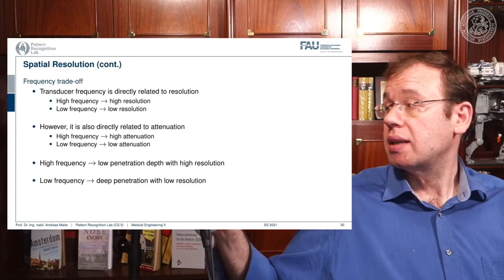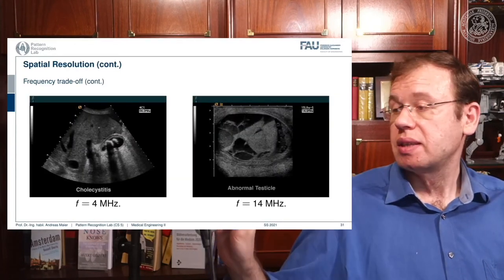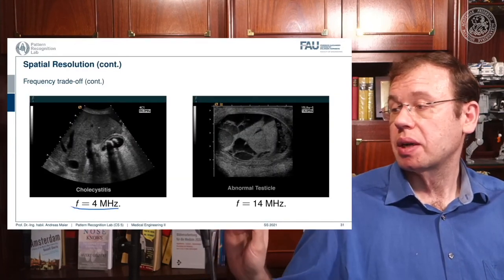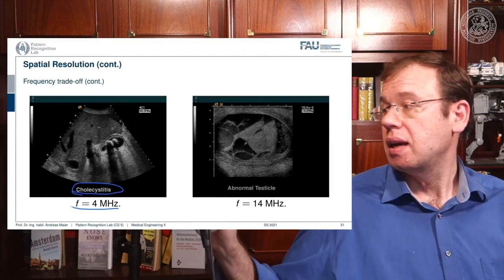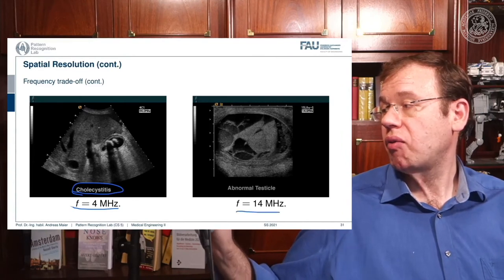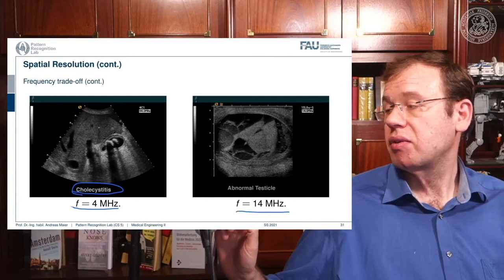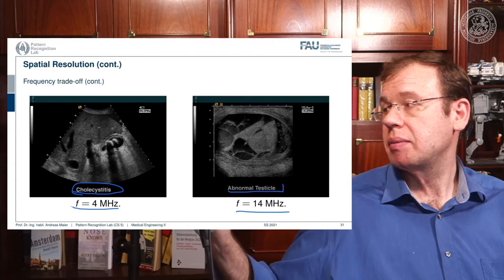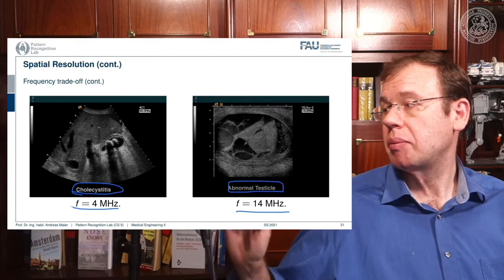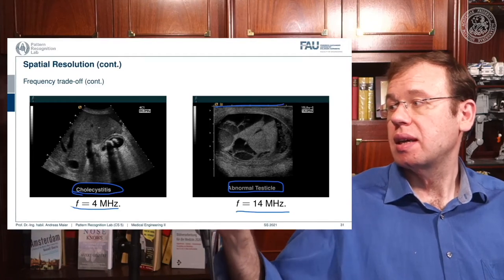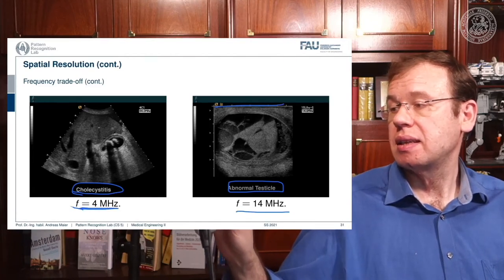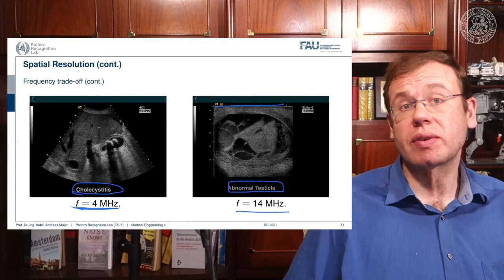Looking at examples: a 4 MHz image shows cholecystitis, and a 40 MHz image shows imaging of an abnormal testicle. The size of the imaged structure is very different depending on the frequency chosen.